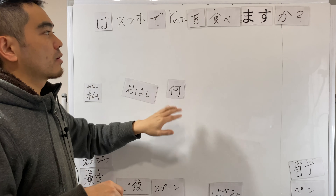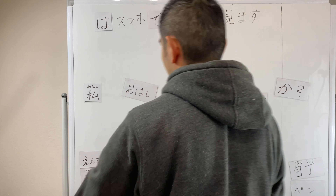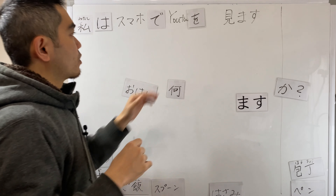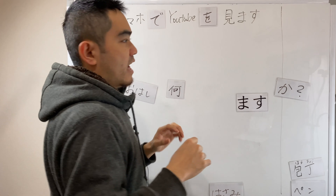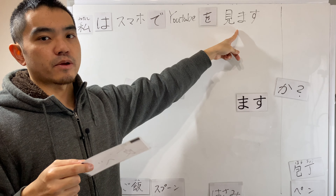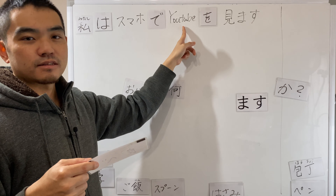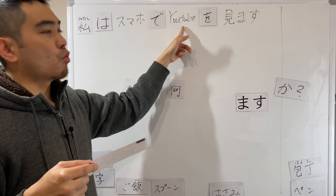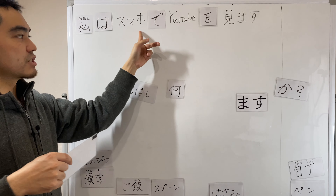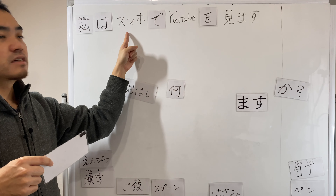This で and を are important to go to the next new vocabulary. You have a purpose to watch something, right? What do you watch? What's your purpose? YouTube, right? And what do you use to watch? スマートフォン、スマホ、スマホで — by smartphone.